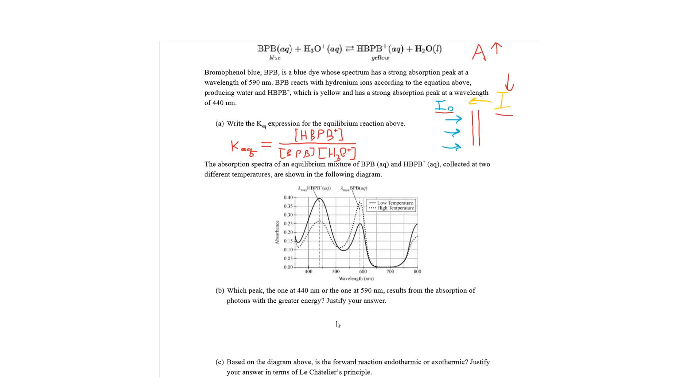And part B says, which peak, or rather, gives you an absorbent spectrum that shows both the wavelengths at HBPB+ and BPB. It says, which peak, the one at 440 nanometers or the one at 590 nanometers, results in the absorption of photons of the greater energy.